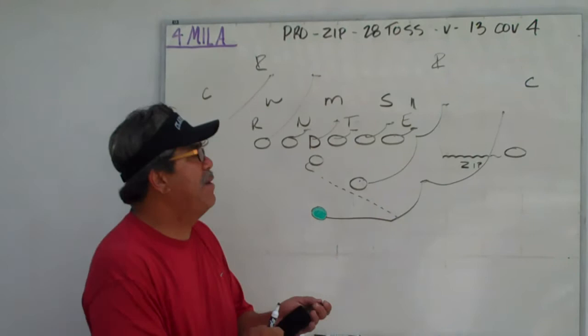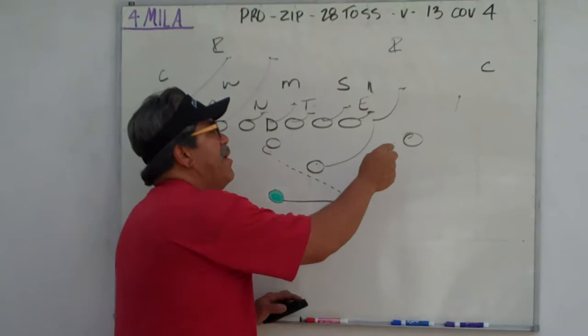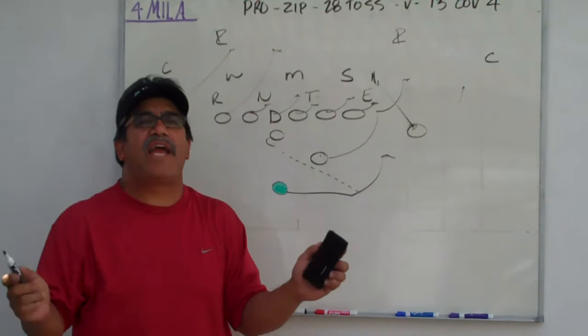The nice way to run this play too is you can just line him up right here, which we call nasty. We line up right there and there he is. He can get that block right there and we go on very first sound.